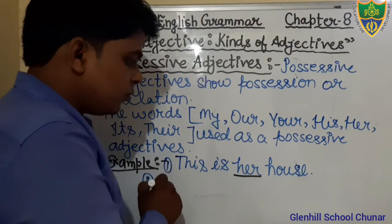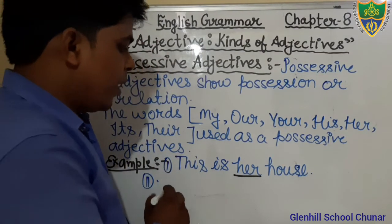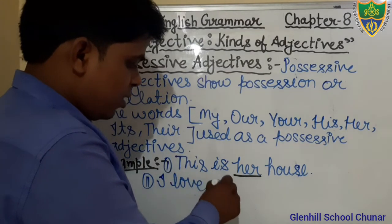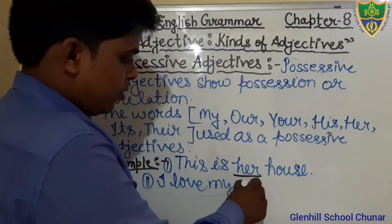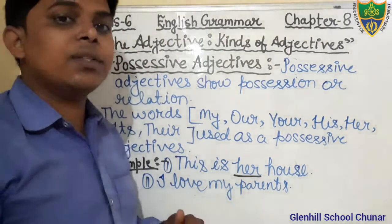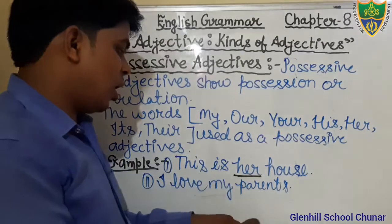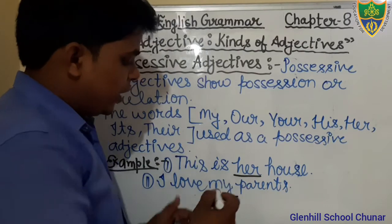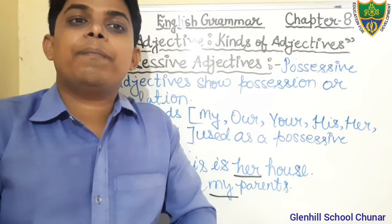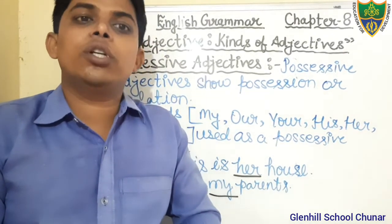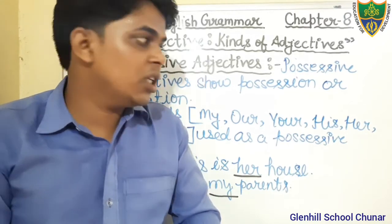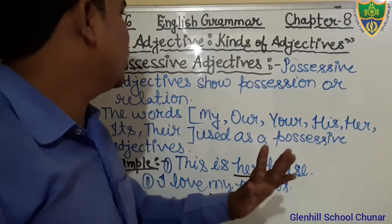Another example: 'I love my parents.' The word 'parents' is a noun. Just before the noun, we are getting the adjective 'my' — that is a Possessive Adjective because it shows ownership or relation. Therefore, 'my' is a Possessive Adjective.